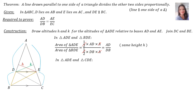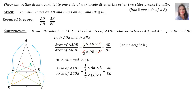Furthermore, in triangle ADE — the top triangle — and triangle CDE — the green triangle — the area of triangle ADE equals half times base AE times perpendicular height K, over the area of triangle CDE equals half times EC times K. The halves cancel and K and K cancel since they share the same height, leaving AE over EC.